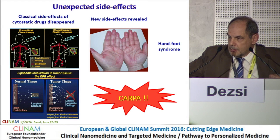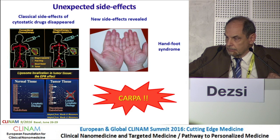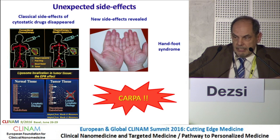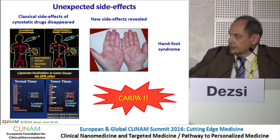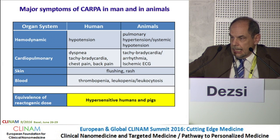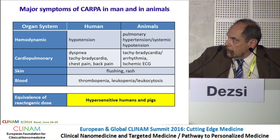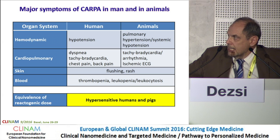Using nanomedicines had great advantages — namely, the classic side effects of, for example, cytostatic drugs disappeared. However, at the same time, new and unforeseen side effects appeared, for example in man, the hand-foot syndrome. That's when it turned out that there is a phenomenon called CARPA. The major symptoms of CARPA in humans comprise many different reactions.